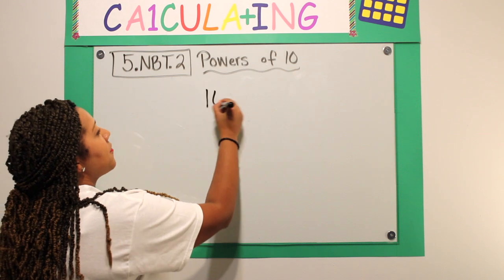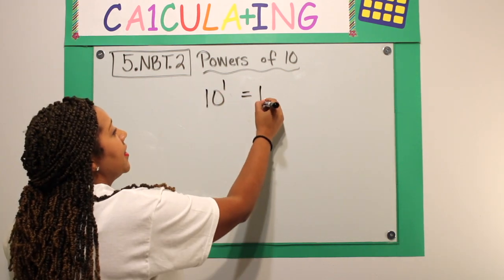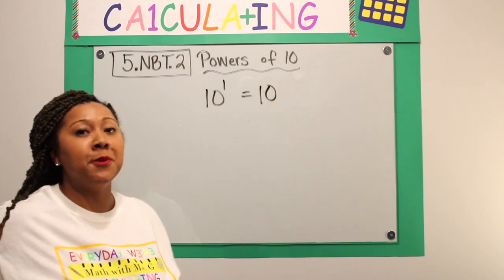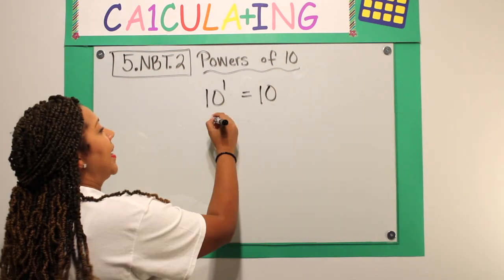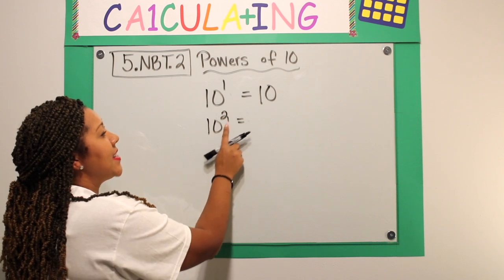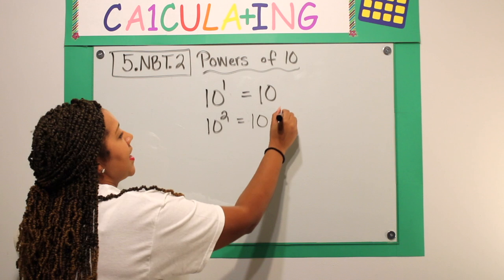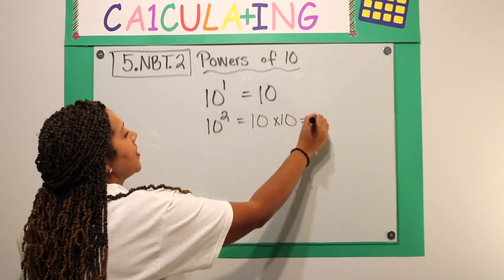I'm going to start with 10 to the first power, which is simply 10 times 1. And we know anything times 1 is always that number. 10 to the second power is just 10 times 10 because I have two groups of 10. And 10 times 10 is 100.